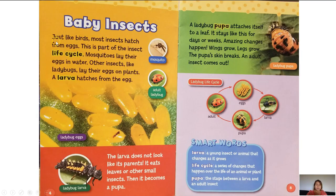Baby insects. Just like birds, most insects hatch from eggs — this is part of the insect life cycle. Mosquitoes lay their eggs in water. Other insects like ladybugs lay their eggs on plants. A larva hatches from the egg. Here we have a photograph of a mosquito, an adult ladybug, and ladybug eggs.